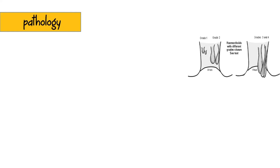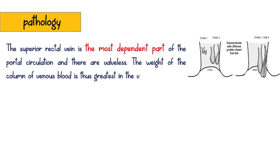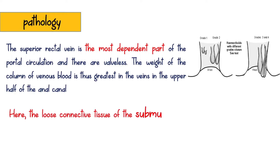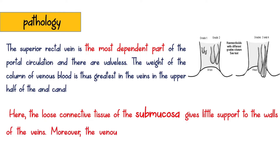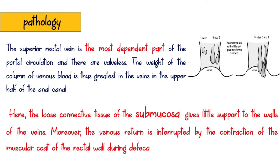Let's see how hemorrhoids are formed. The superior rectal vein is the most dependent part of the portal circulation and is valveless. The weight of the column of venous blood is thus greatest in the veins in the upper half of the anal canal. Here, the loose connective tissue of the submucosa gives little support to the walls of the veins. Moreover, the venous return is interrupted by the contraction of the muscular coat of the rectal wall during defecation.